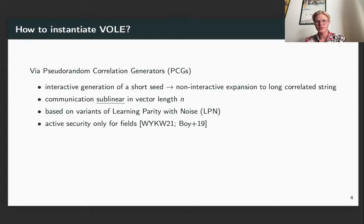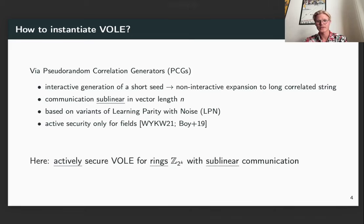The way you usually generate vector OLE, however, is through pseudorandom correlation generators. This is where the prover and the verifier interact to generate a short seed, but then they can non-interactively expand this into long correlated string of length N. This is usually done with only sublinear communication in the vector length N. It's based on variants of Learning Parity with Noise, and through this it has been proven actively secure only for fields. In this paper we provide the first actively secure vector OLE for rings Z2K with sublinear communication.